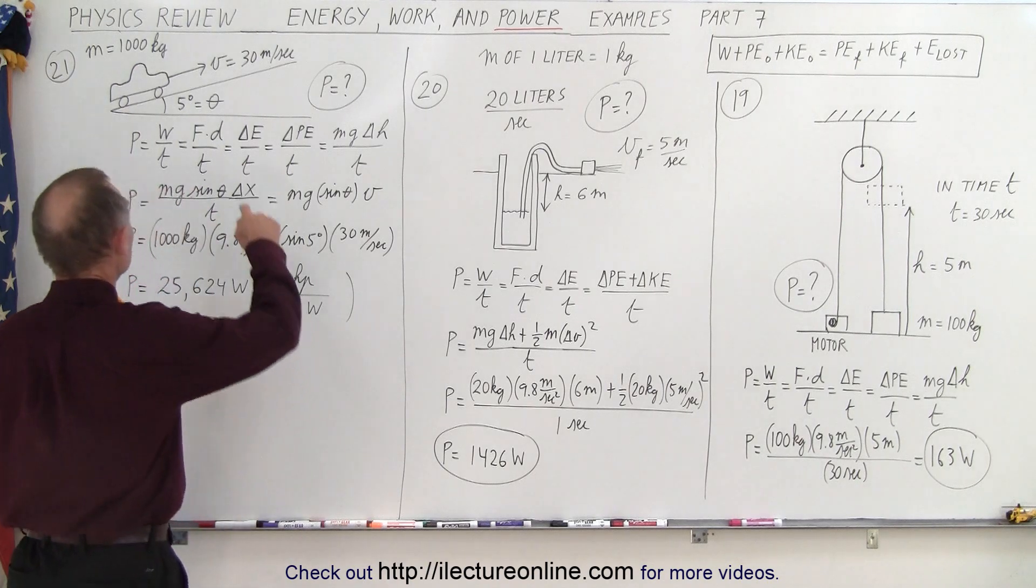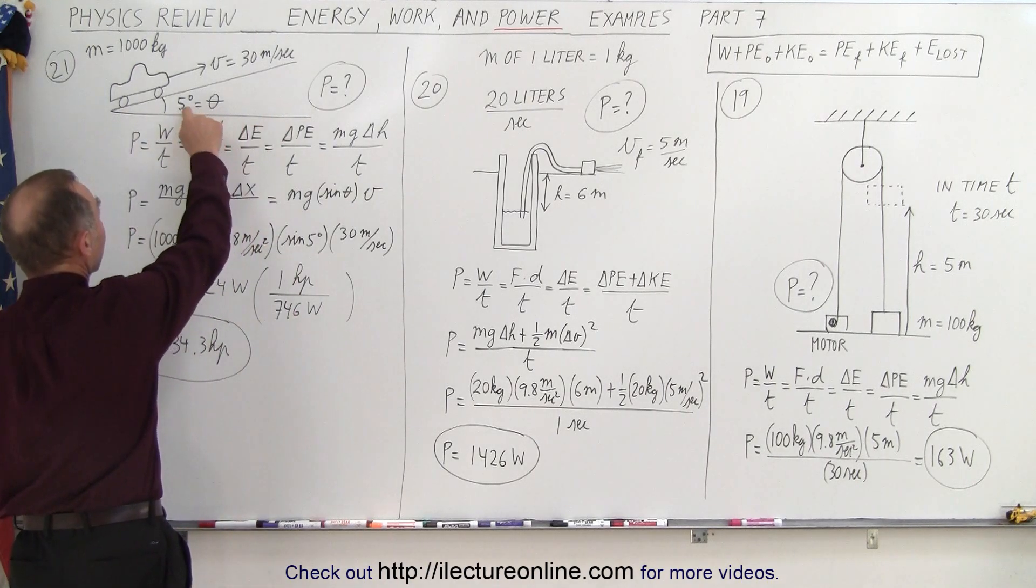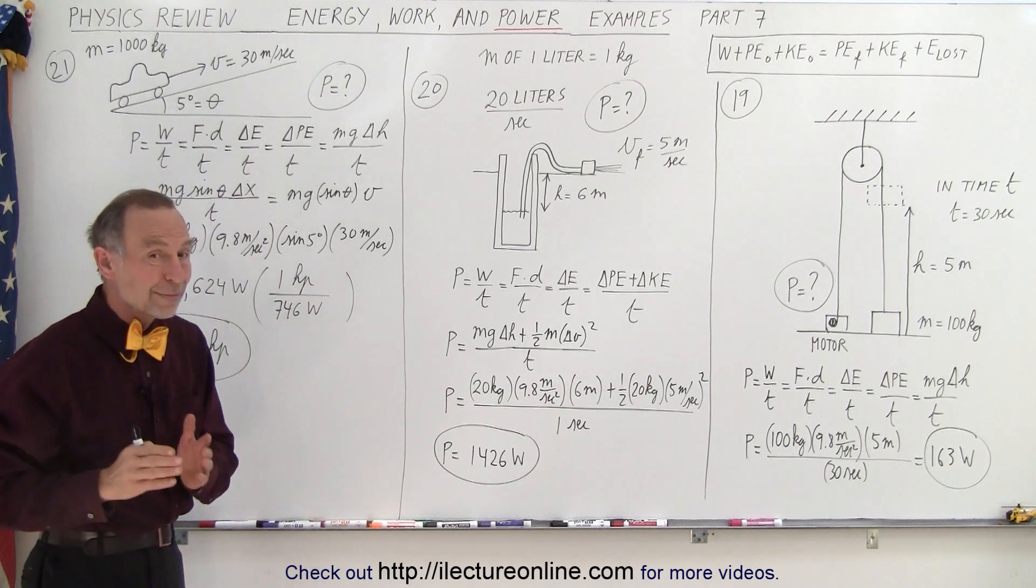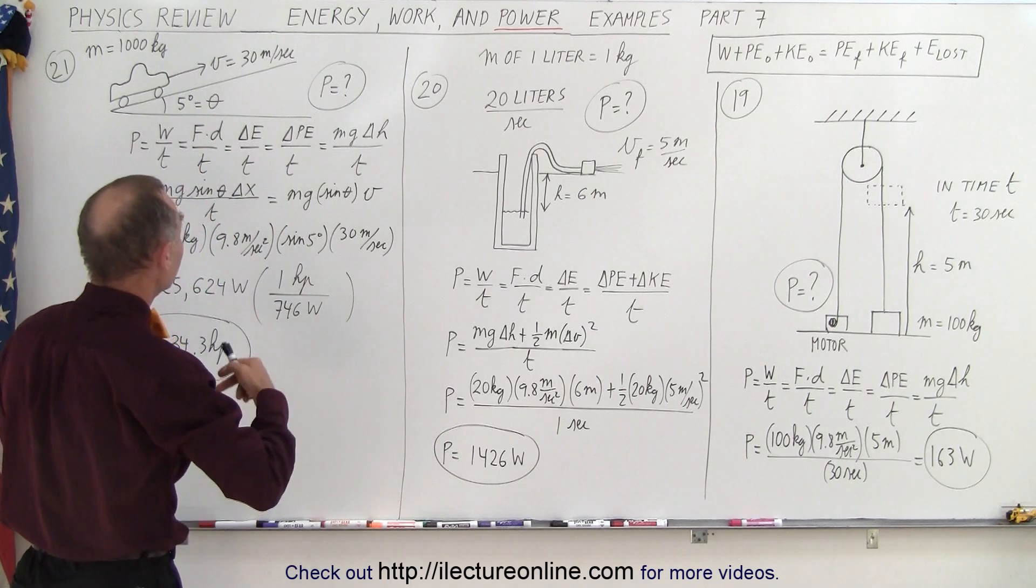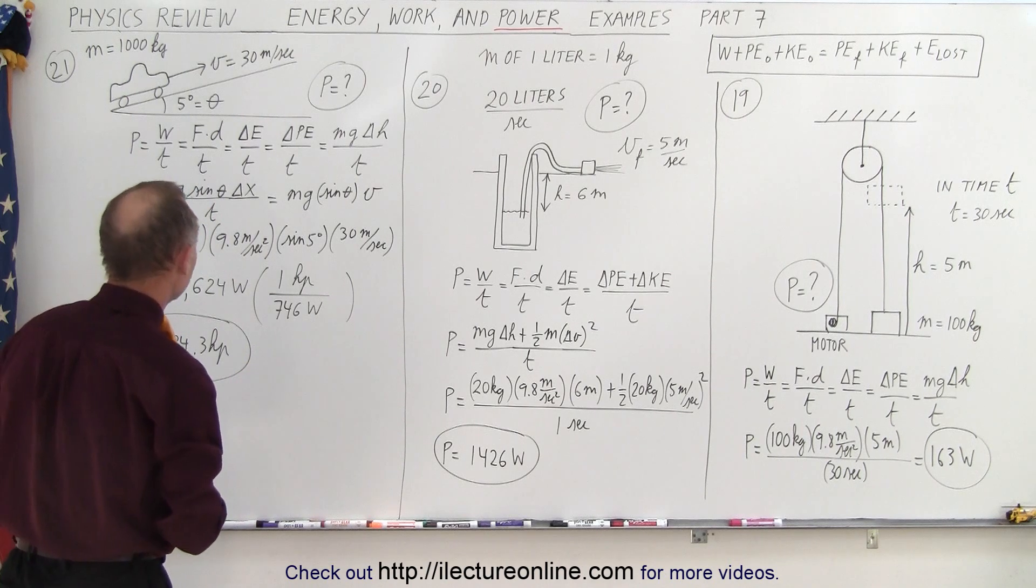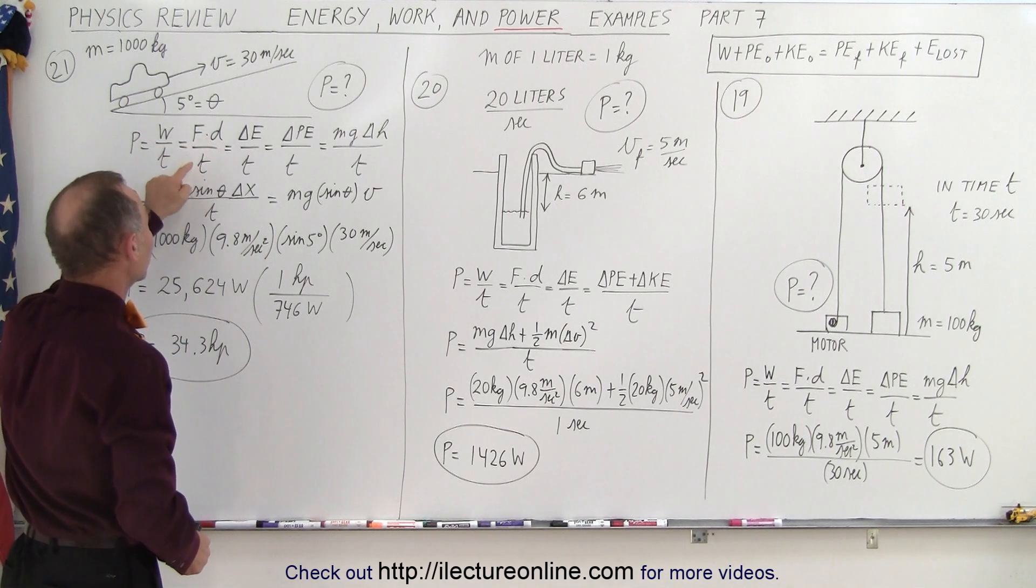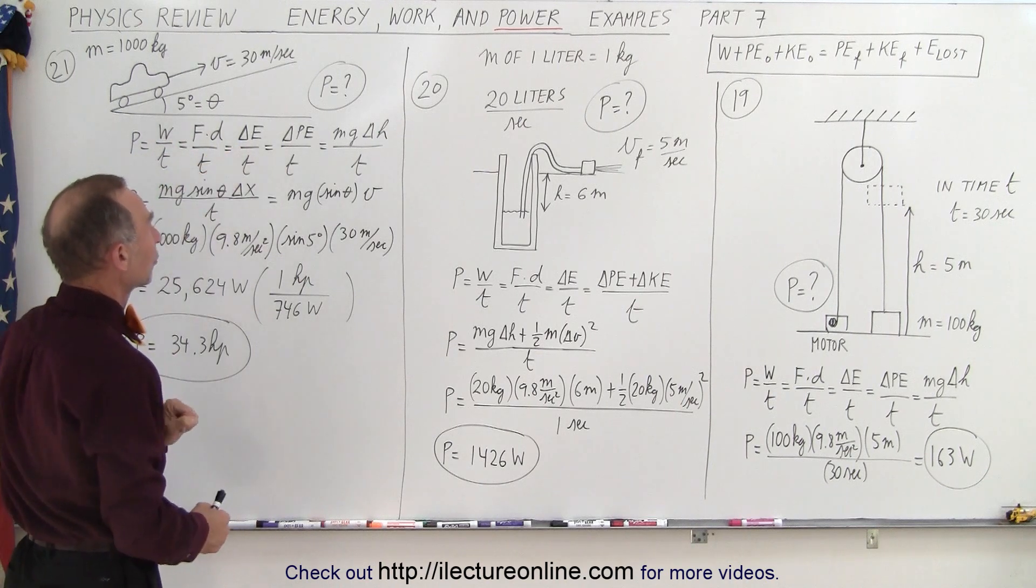And then we have an example where we're driving a car up an incline. Let's say the incline is 5 degrees, the car is moving at a constant 30 meters per second, and so what power requirements are there? And again power is work over time, which is force times distance over time, or the change in energy over time.